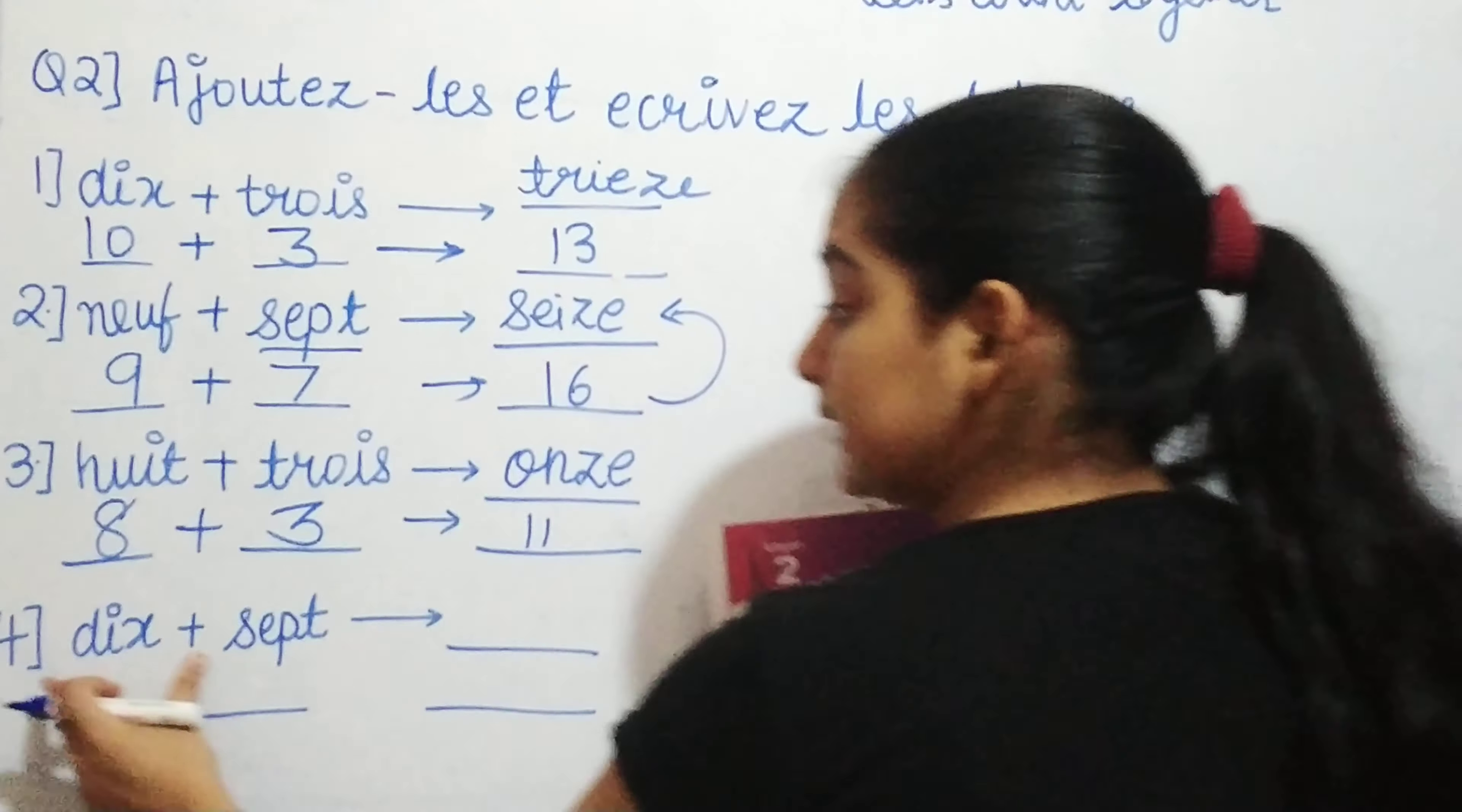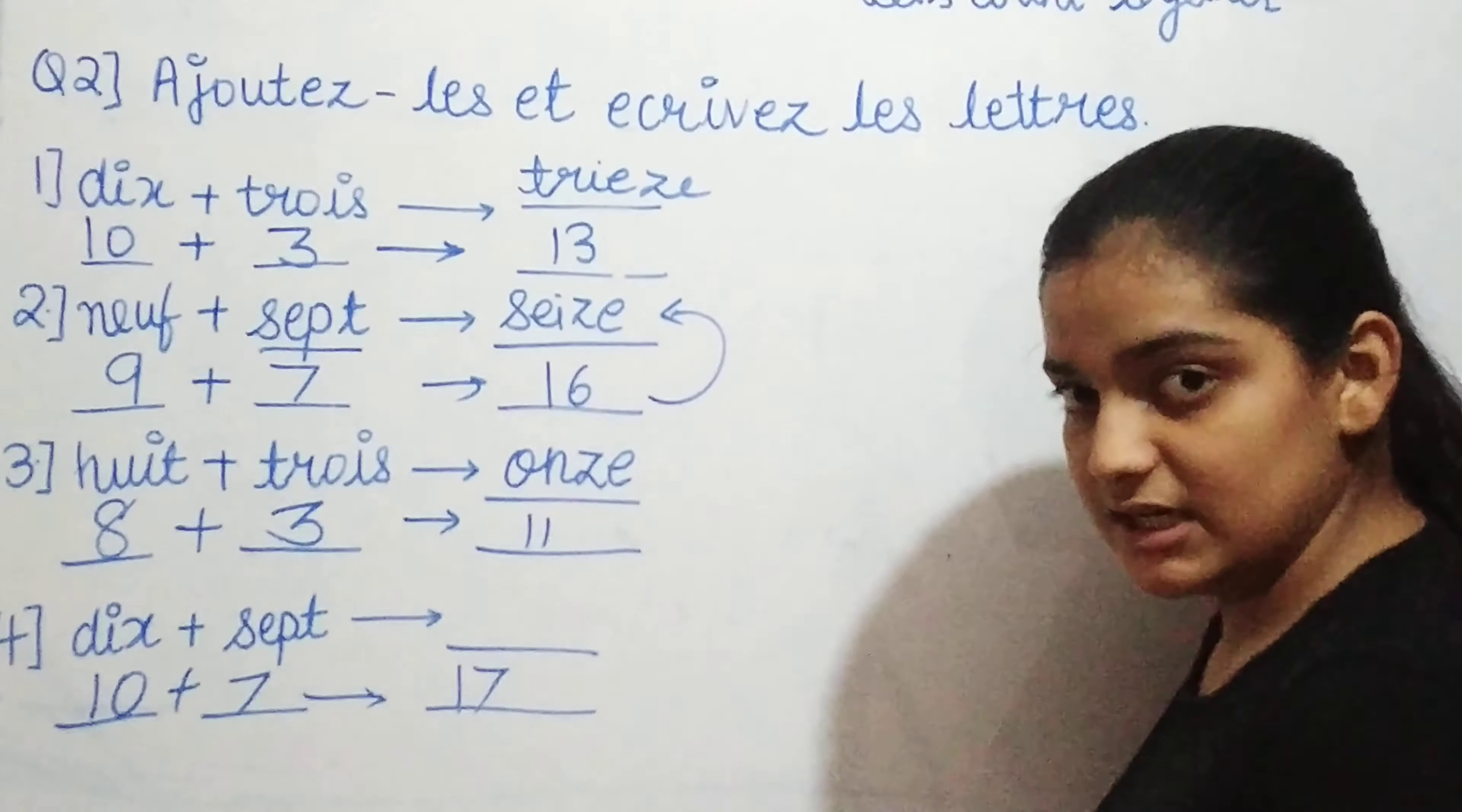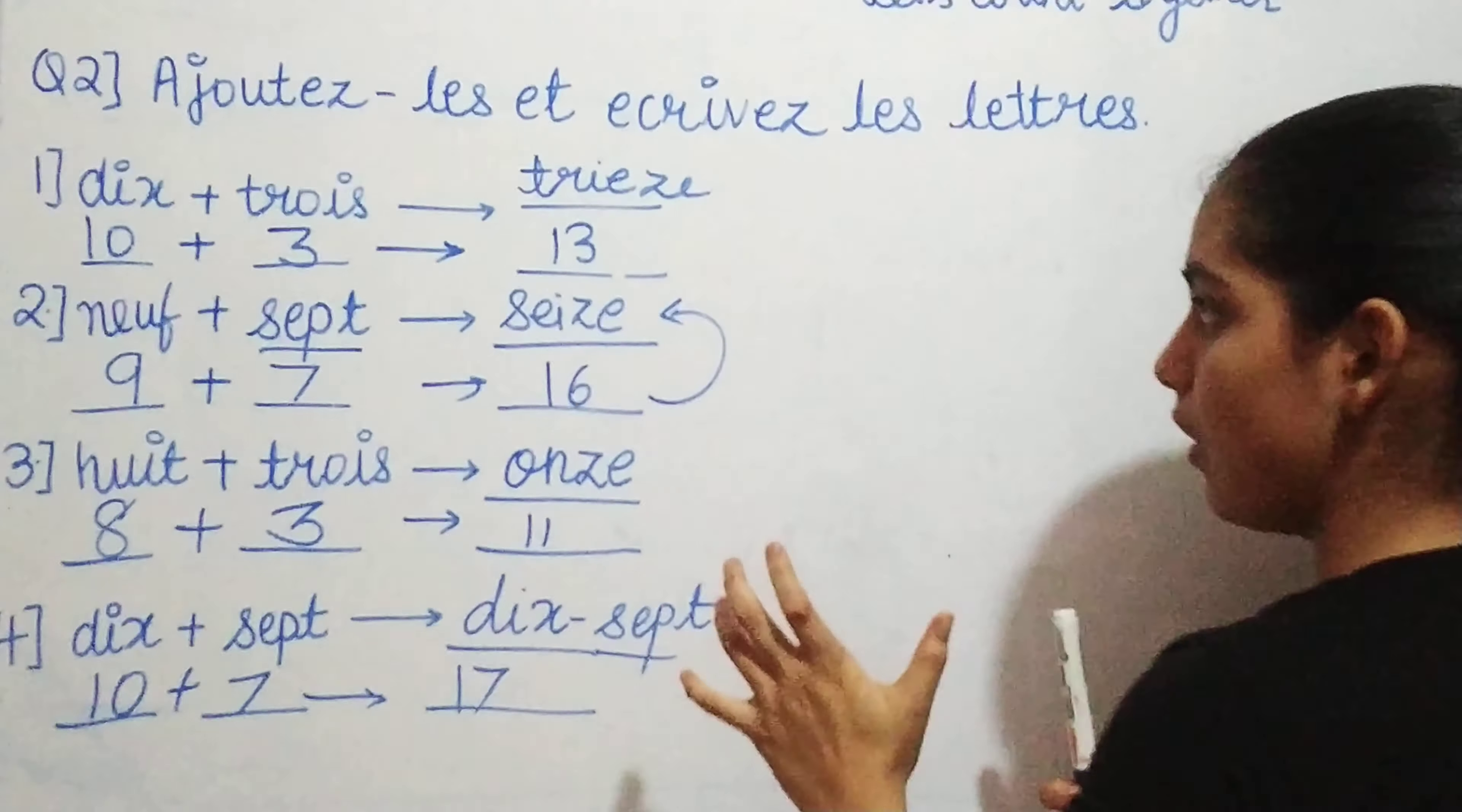Let's do the last one. That is dix plus sept. Now again, dix is how much? 10. Sept is how much? 7. So, 10 plus 7 gives you how much? 17. And we say 17 in French as dix-sept.